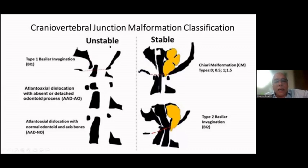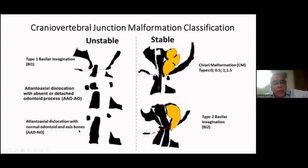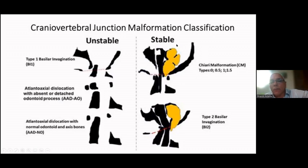The unstable cases came mainly from China and India, and some centers studying children in the U.S., while the stable cases came from other parts of the world. When we look at the unstable cases, they are composed mainly of children and male patients predominantly. We can put all malformations under unstable and stable umbrellas. In the unstable category, it's possible to separate basilar invagination type 1 or A according to Goel, atlanto-axial dislocation with absence or detached odontoid process, and atlanto-axial dislocation with normal bones, which is probably a ligament problem.